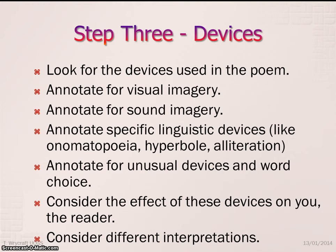Next step: devices. Look for all the devices in the poem and make a good note of them — a highlighter pen and colourful annotation helps. When annotating for devices, think in fields of imagery: sound imagery, visual imagery, smells, sensations, types of colour. If it's full of dark tones or light citrusy tones, note that. Also consider whether there's an extended metaphor — look to see if the imagery follows a pattern and links together by theme.